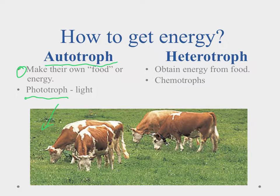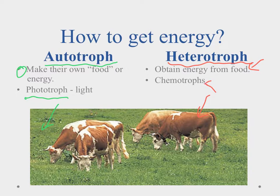If you're not an autotroph, that means you are a heterotroph. A heterotroph gets its energy from the food it eats. We and the cow you see here are what we call chemotrophs, because we get our energy from chemicals — primarily glucose or sugars, which the phototrophs make from sunlight through photosynthesis.